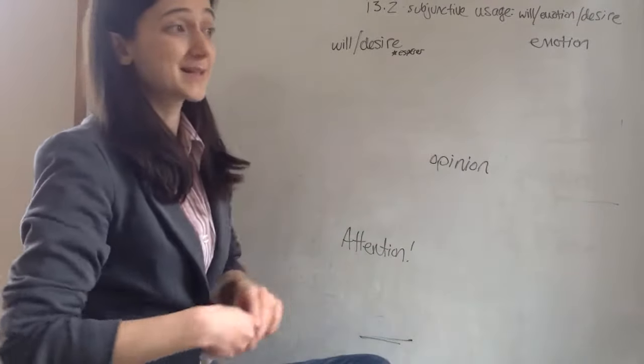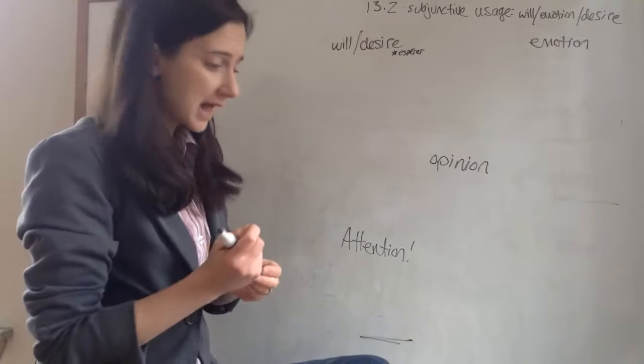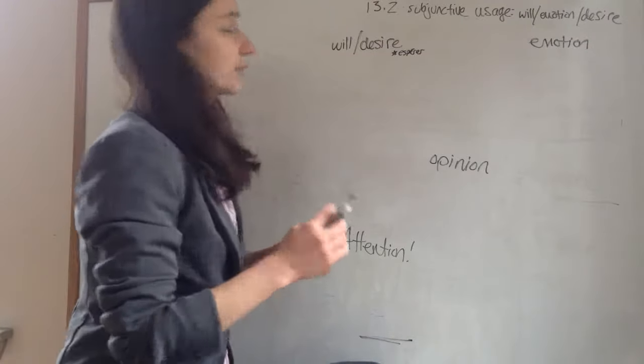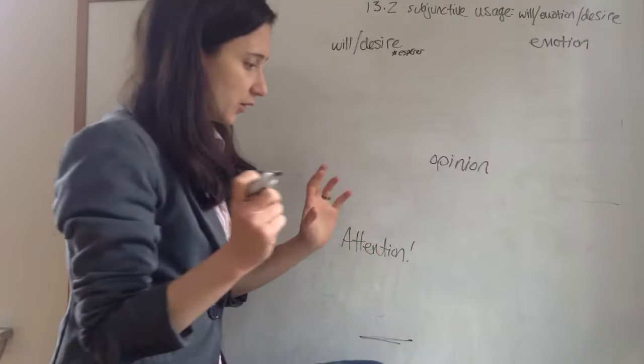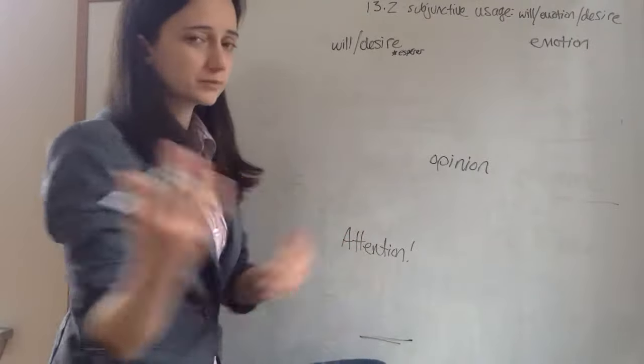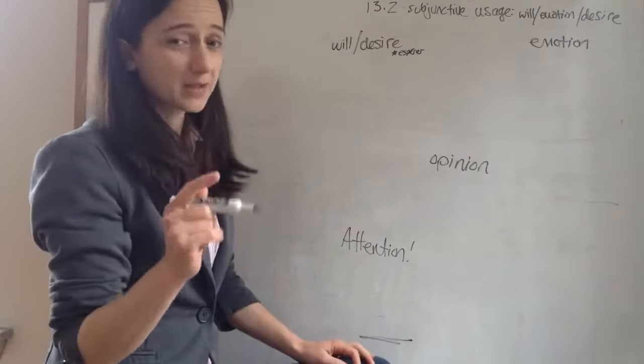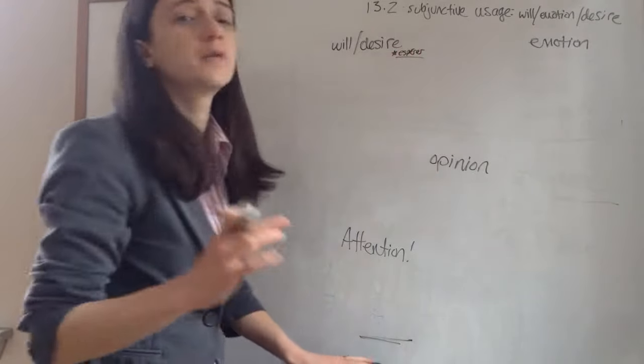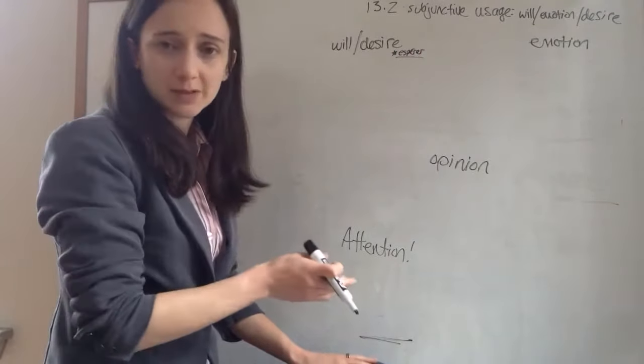Will and Desire, basically just saying you want something, you prefer something, you like something to be a certain way. Really not that difficult. The one exception is hope. So if you hope for something, you don't use the subjunctive.